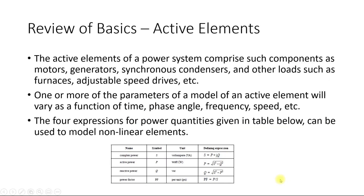Active elements of a power system comprise motors, generators, synchronous condensers, and loads such as furnaces and adjustable speed drives. These are active because one or more of their parameters — time, phase angle, frequency, speed — vary, and as these quantities change, the response of the active element changes.